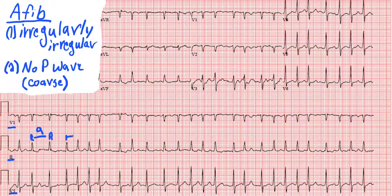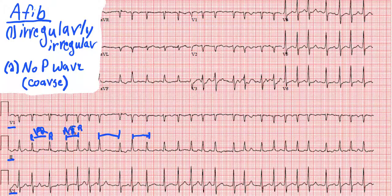This R-to-R over here looks to be about 8 boxes. And you can pick any R-to-R — all of them are going to be different. There's no pattern to the irregularity. It's not like you have 8, then 12, then 8, then 12. They're all random, meaning it's irregularly irregular. We'll erase this here to clear up a little room.